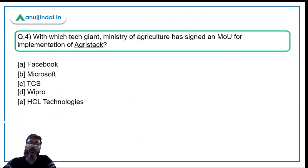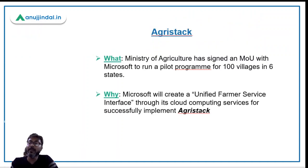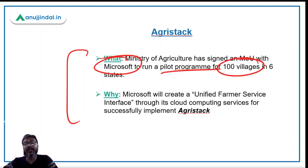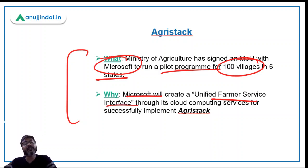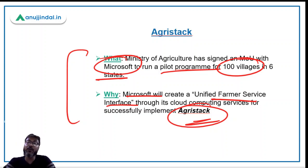Now for question number four, the last question for today: With which tech giant has the Ministry of Agriculture, headed by Narendra Singh Tomar, signed an MOU for implementation of AgriStack? The ministry has signed this MOU with Microsoft. Through this MOU, a pilot program will be run for 100 villages in six states. Microsoft will create a unified farmer service interface through its cloud computing services for successful implementation of AgriStack.